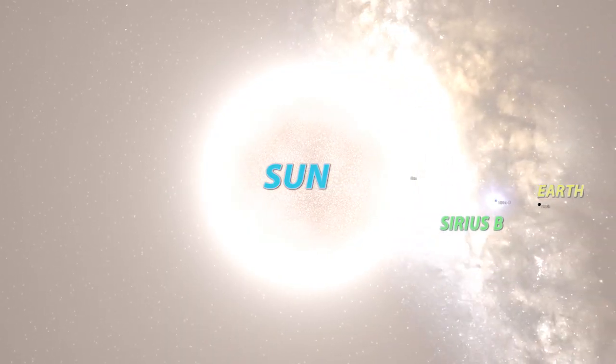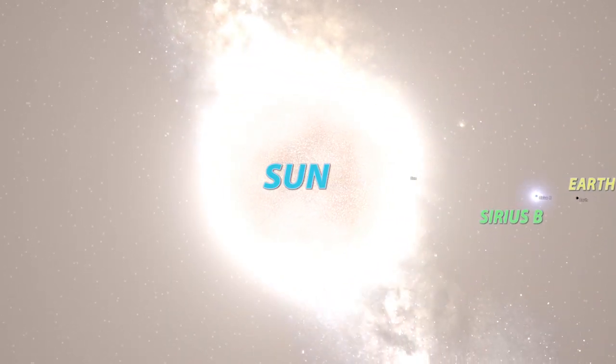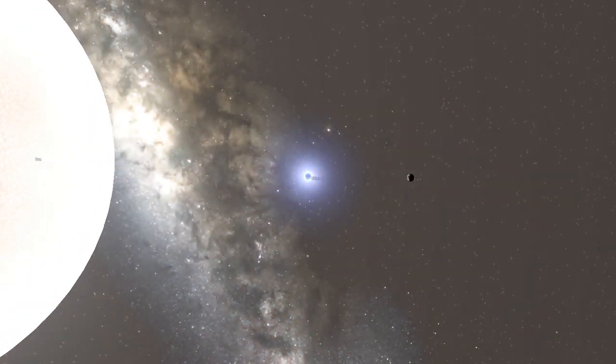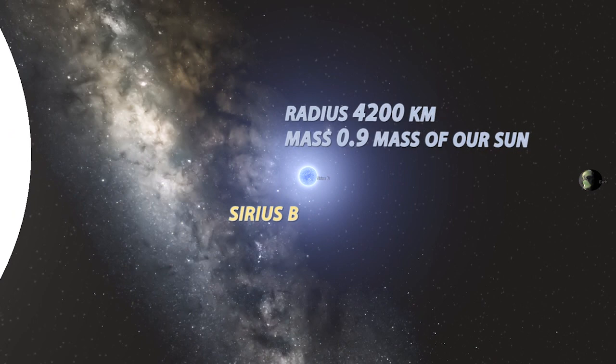When Sirius B, a white dwarf, was observed by astronomers, they found that it had a radius of 4200 kilometers, which is smaller than Earth's radius, and it was almost as massive as our sun. That means it had a density a million times the density of our sun. At that moment, there was no existing theory that could explain this.